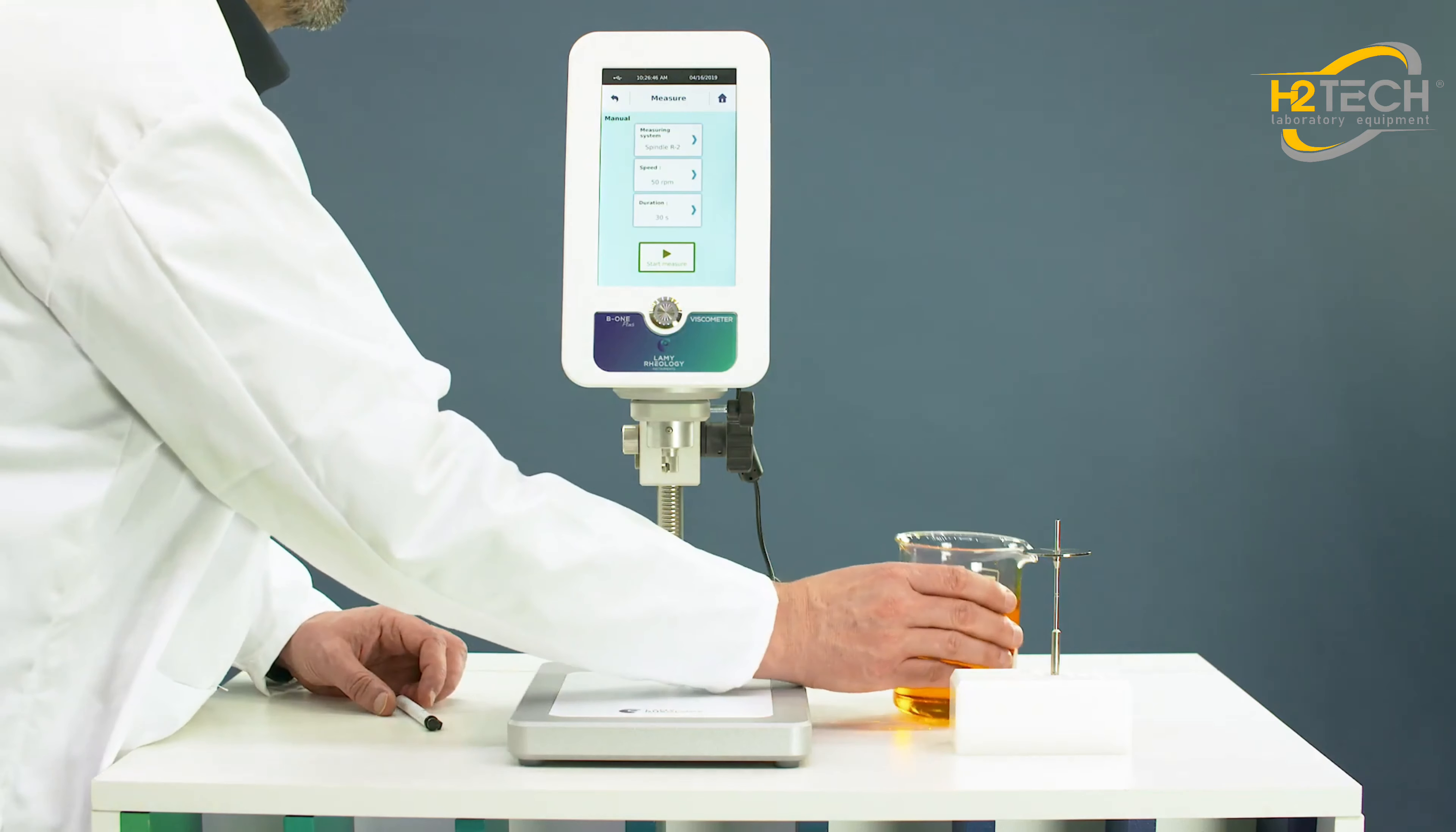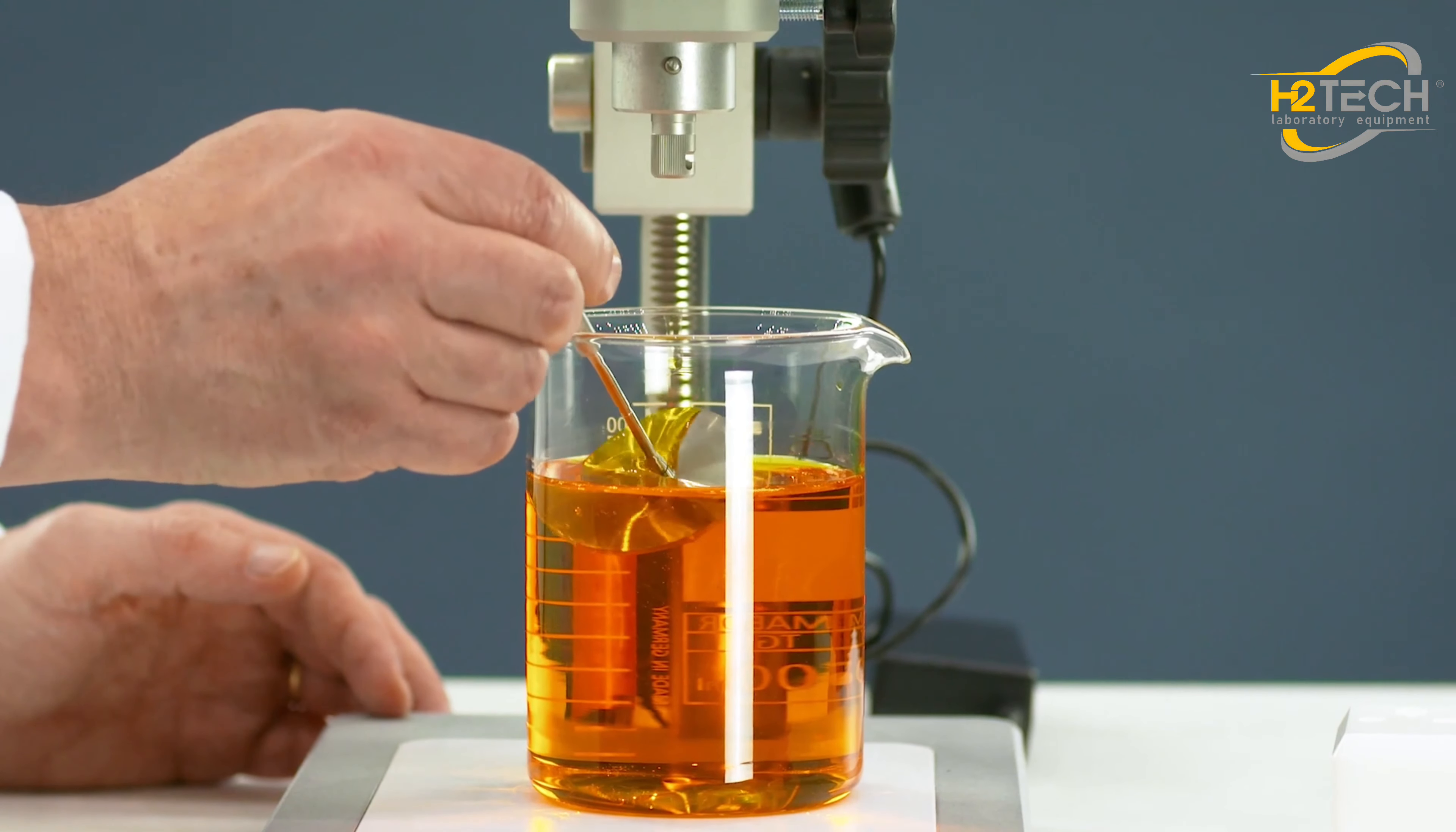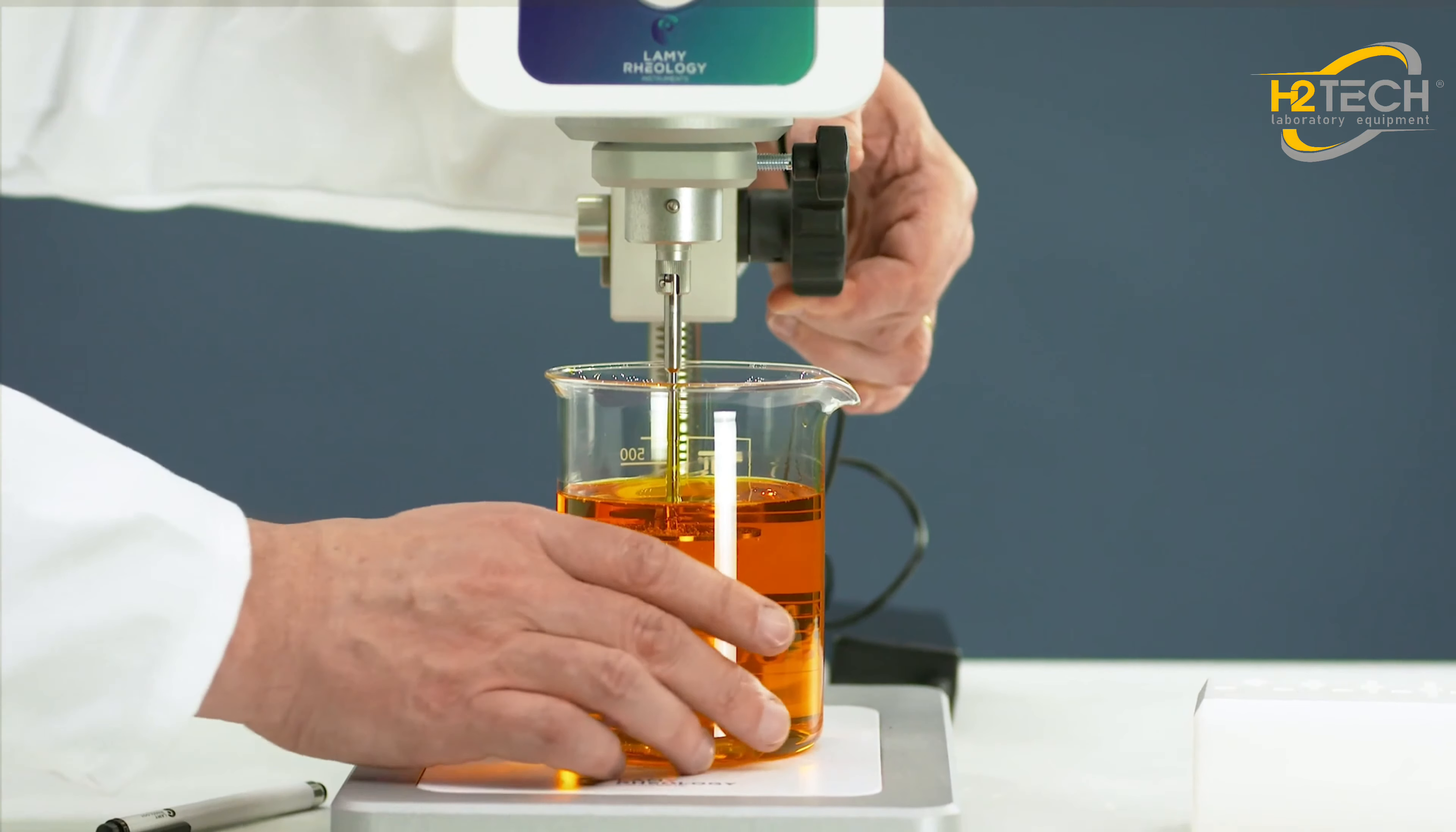Take beaker with the sample and place it below the device. Take the spindle and tilt it obliquely to avoid air bubbles. Connect the spindle with easy bayonet coupling. Reach the perfect position by using the mark on the spindle's shaft.